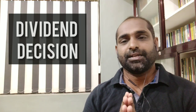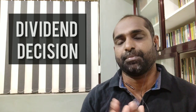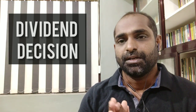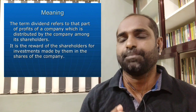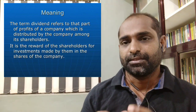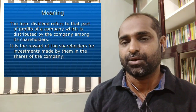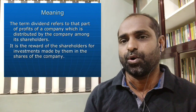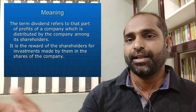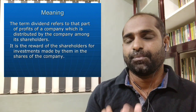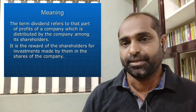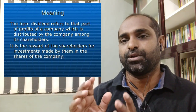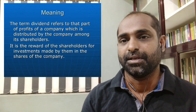We are going to learn some theories related to the Dividend Decision. What is the Dividend Decision? The total profit of a firm — how can the real owners divide a portion of it? The part of the profit that is divided among the shareholders — we call it a Dividend.